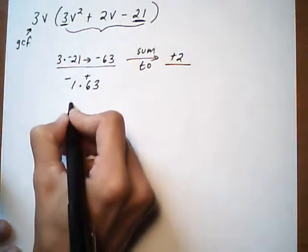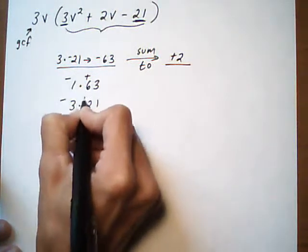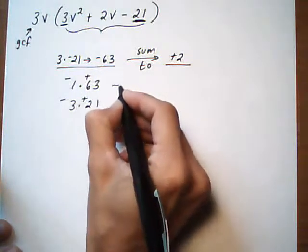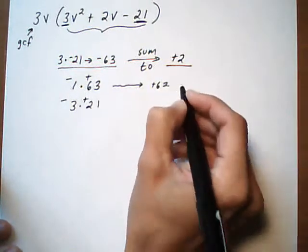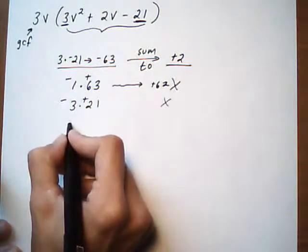And then you start going up, so 2 doesn't work. Then we get 3 times 21, and again we're giving the positive to the larger one. And keep an eye on what these guys are summing to. Alright, this one is summing to plus 62, so that's not working. This one doesn't work either.